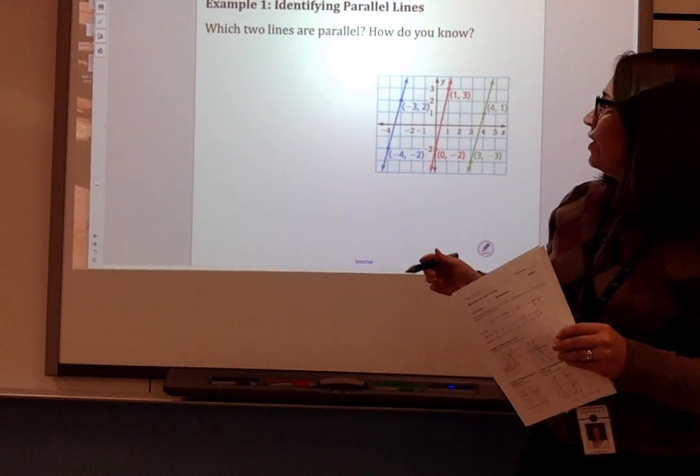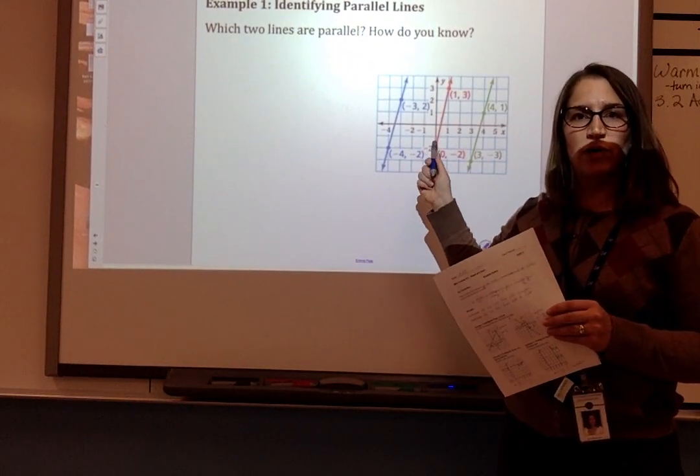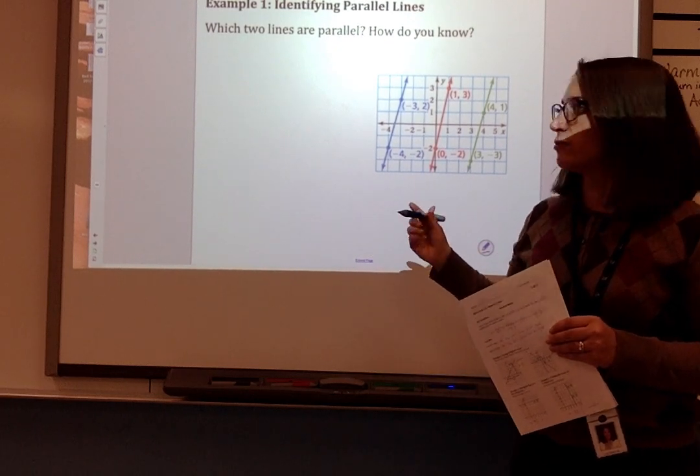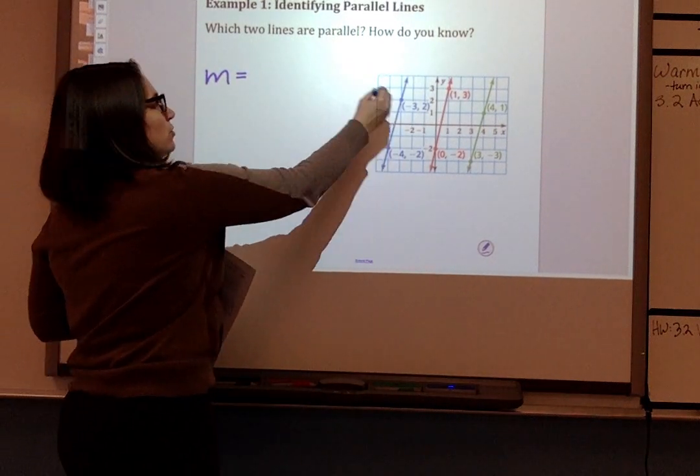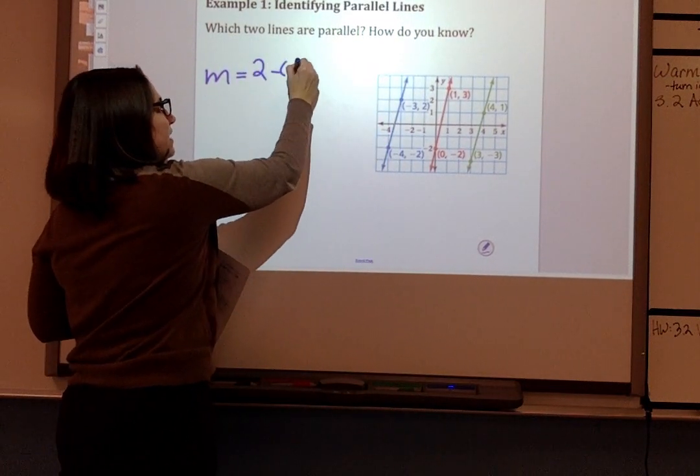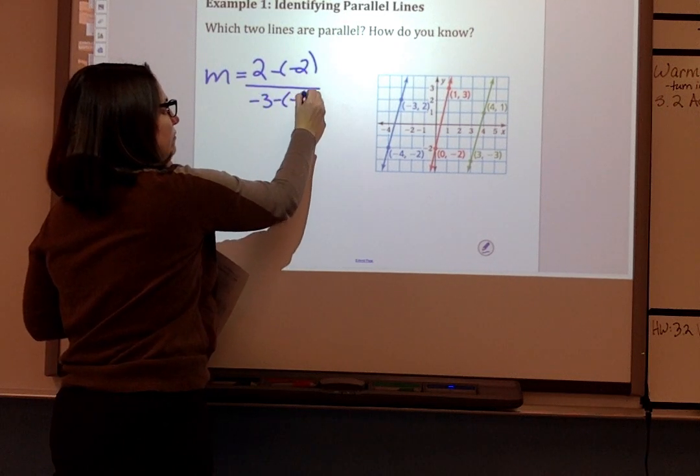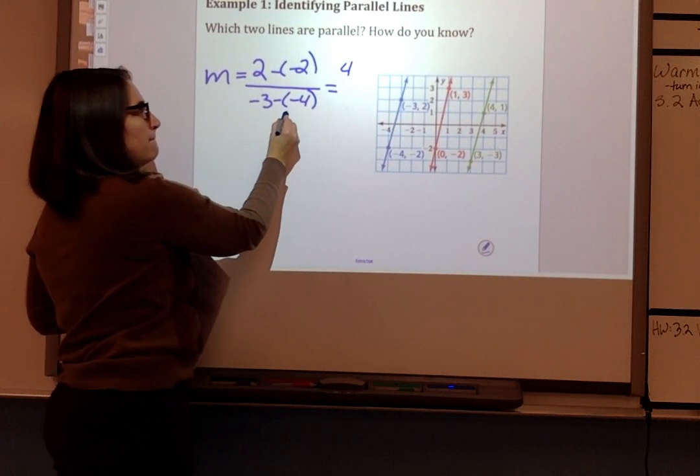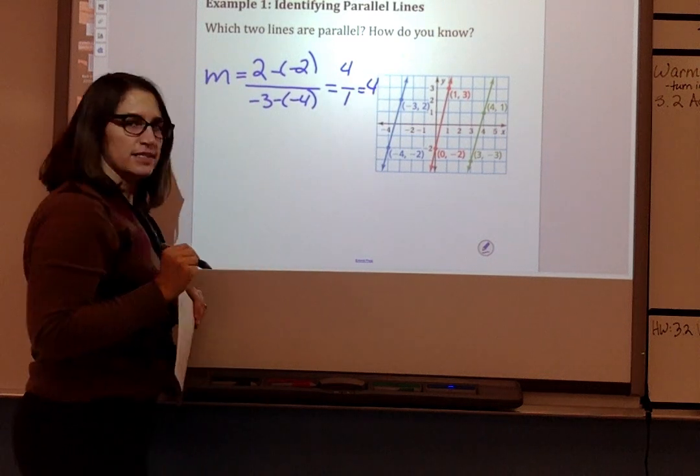So we want to know which of these two lines are parallel. On my screen, I see a blue, a red, and a green. I know on yours you don't have them in color, but we'll just go from left to right. So the slope of the blue line, we'll do 2 minus negative 2 over negative 3 minus negative 4. 2 minus negative 2 is 4, negative 3 minus negative 4 is 1. So the slope of that blue line is 4. And that looks about right, it's a positive slope, it's pretty steep.